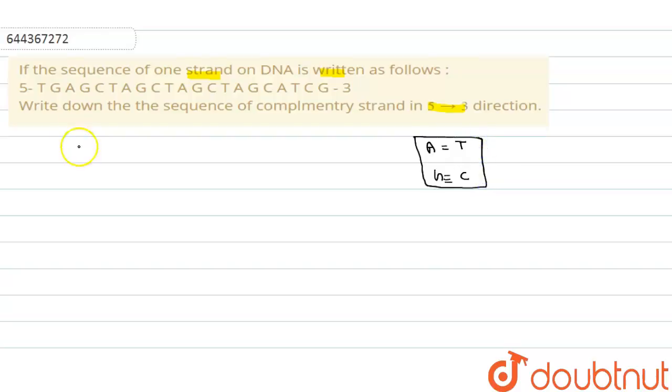So if there is T, the complementary strand will be A. And if there is G, the complementary strand will be C. For this complementary strand, we're writing in the 5' to 3' direction. So here is T, so the complement of T will be A. So we can write A.